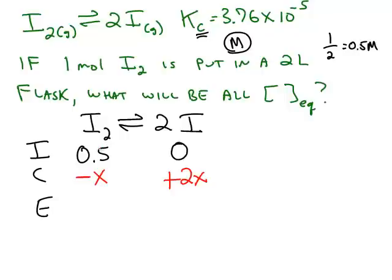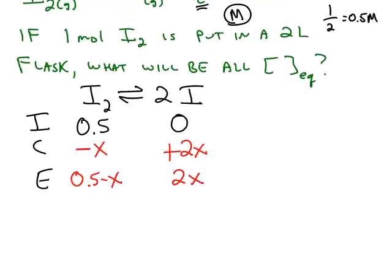At equilibrium, you just add down the columns, 0.5 minus x for the reactant, and 0 plus 2x is just 2x for the product.